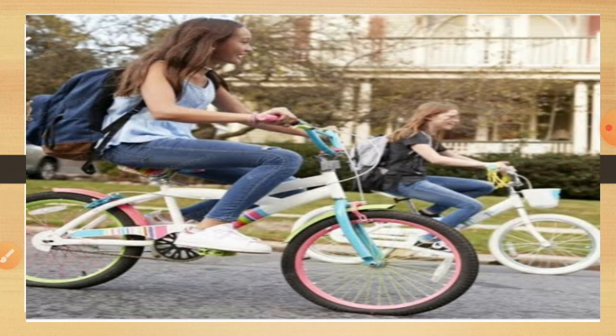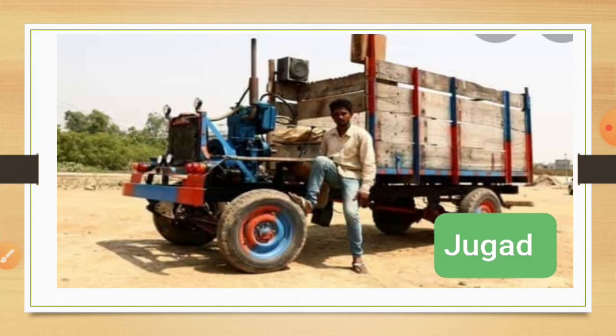Next is Jugad. In Gujarat, children use Jugad to reach the school. Jugad means putting together. This vehicle has been made by putting together parts from other vehicles or machines.